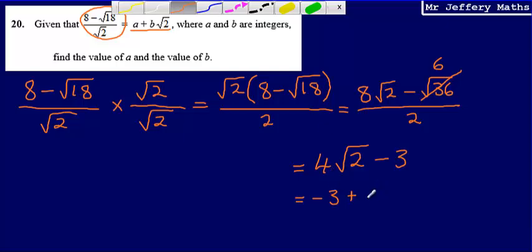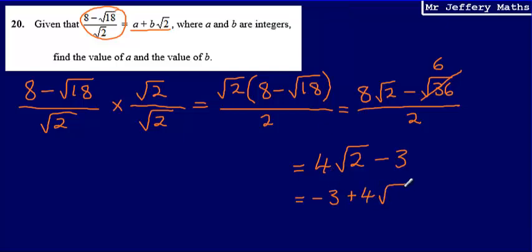So minus 3 plus 4 root 2. What are the values of a and b? Well, a, that's the number in front, a is equal to minus 3. And then b is equal to 4. So final answer, a is equal to minus 3 and b is equal to 4.